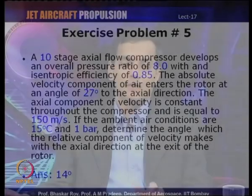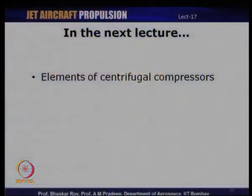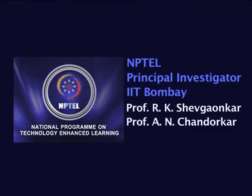There are five exercise problems for you to solve; the key to solving all of them is to get the velocity triangles right, since angles are specified in many of them. I hope you are able to solve these problems based on what we have discussed in today's lecture as well as the theory from the last few lectures on axial flow compressors. That brings us to the end of today's tutorial session. In the next lecture, we shall begin the next chapter and discuss centrifugal compressors.